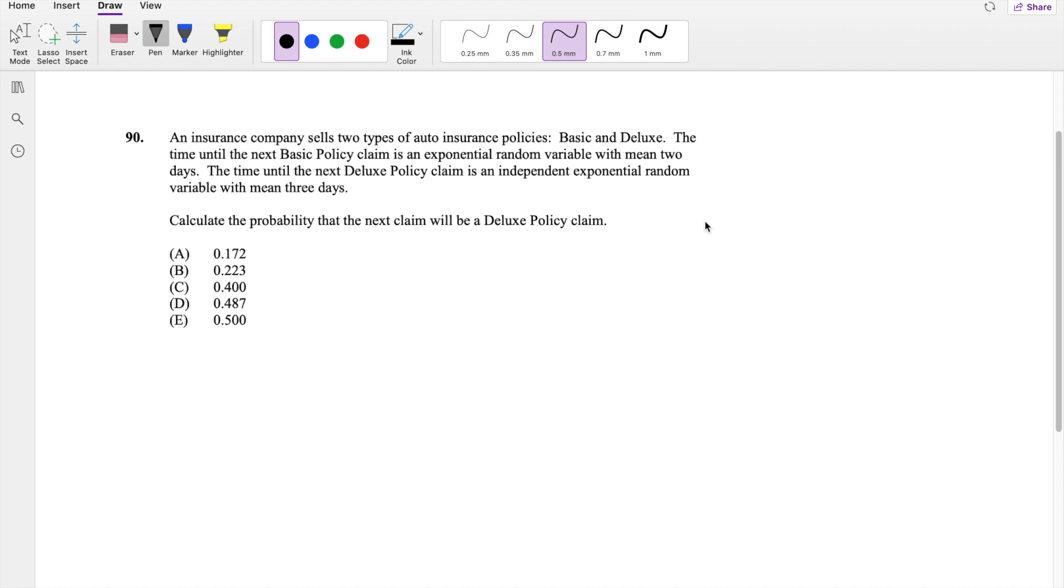So we know for exponential functions, the probability distribution for lambda is equal to 1 over lambda e to the negative t over lambda. So we know for a basic policy with the exponential function that's exponentially distributed with mean 2, this is equal to 1 over 2 e to the negative t over 2. And likewise for deluxe, it's going to be with a mean of 3, so that's going to be 1/3 e to the negative t over 3. But I'm actually going to differentiate this a little bit because these two t's are different values. So I'm going to call this little b and this is little d.